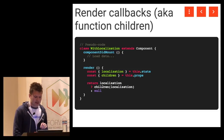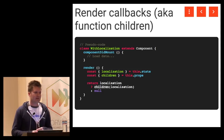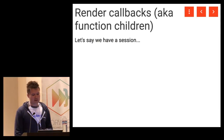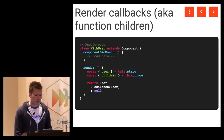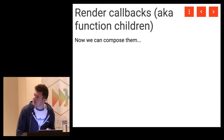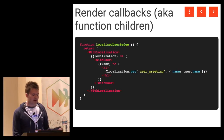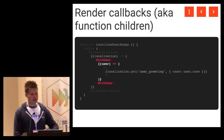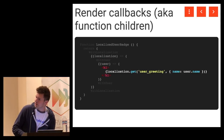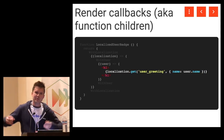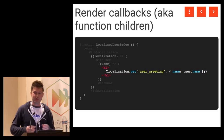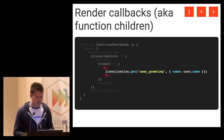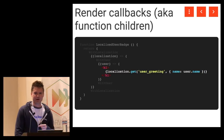The key thing is that this component can pass the localization to our render callback, and we can use it without caring about how it's loaded. One developer writes a component that manages localization; another writes a component that loads user data. The cool thing about render callbacks is that we can compose these. We could use our localization component, pass it a render callback that returns our user component, which eventually returns a localized user greeting. You can mix and match these from different libraries or authors — they don't need to know anything about each other, don't use context, and are easy to test and maintain.